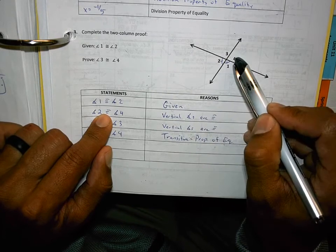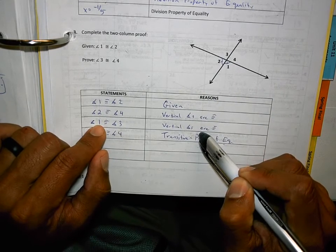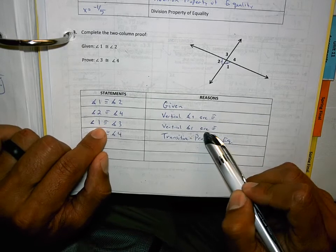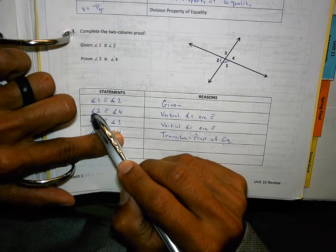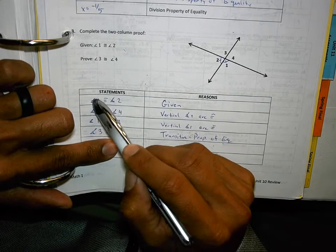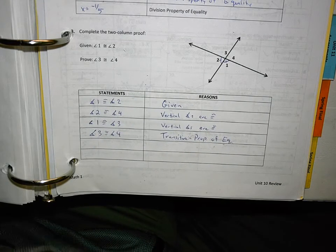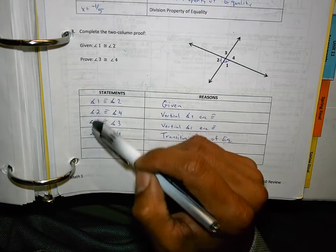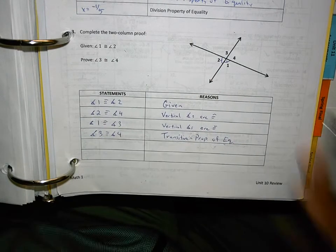Well, if 2 is congruent to 4, I also know that 1 is congruent to 3 because those are also vertical angles. I put here vertical angles are congruent, but you could also say the definition of vertical angles as well. And then here's what I look at. 1 is congruent to 2, 2 is congruent to 4, and 1 is congruent to 3. So, I could say since these are the same and they're both equal to the same thing, then 3 is congruent to 4. I could say that by the transitive property of equality because these are the same values are the same value. That was the shortest way I could come up with.